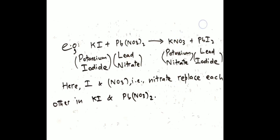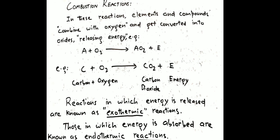Combustion reaction is a reaction when an element or compound reacts with oxygen — oxidation occurs and a lot of energy is released. Combustion reaction is also called burning. A substance reacts with oxygen to form an oxide and a large amount of energy is released. For example, when carbon reacts with oxygen, it becomes carbon dioxide and energy is released.